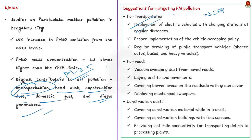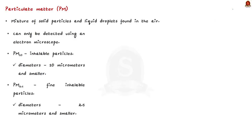These data and suggestions are expected to contribute to the action plans framed under NCAP, which is the National Clean Air Program. In this regard, let us revise about particulate matter pollution and NCAP. Particulate matter, shortly written as PM, is the term for the mixture of solid particles and liquid droplets found in the air.